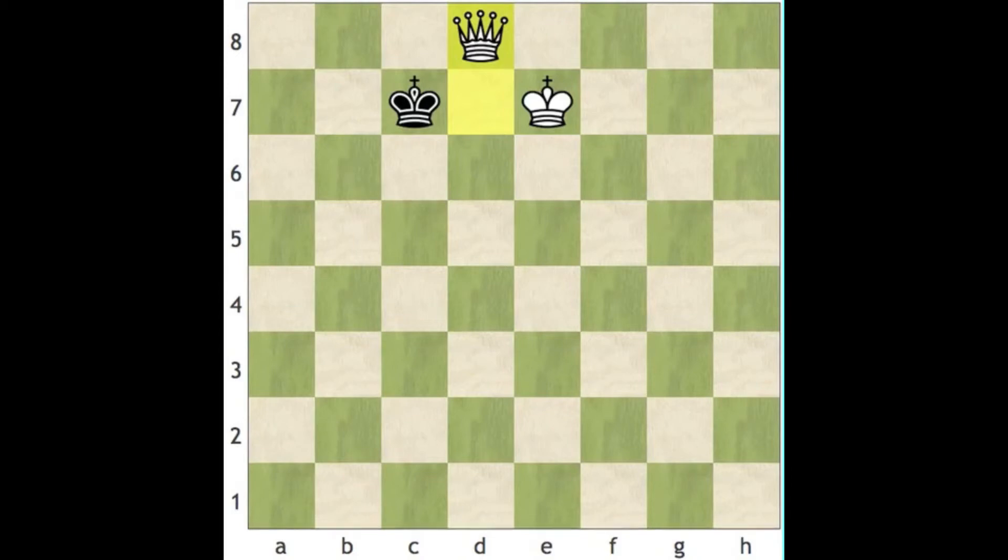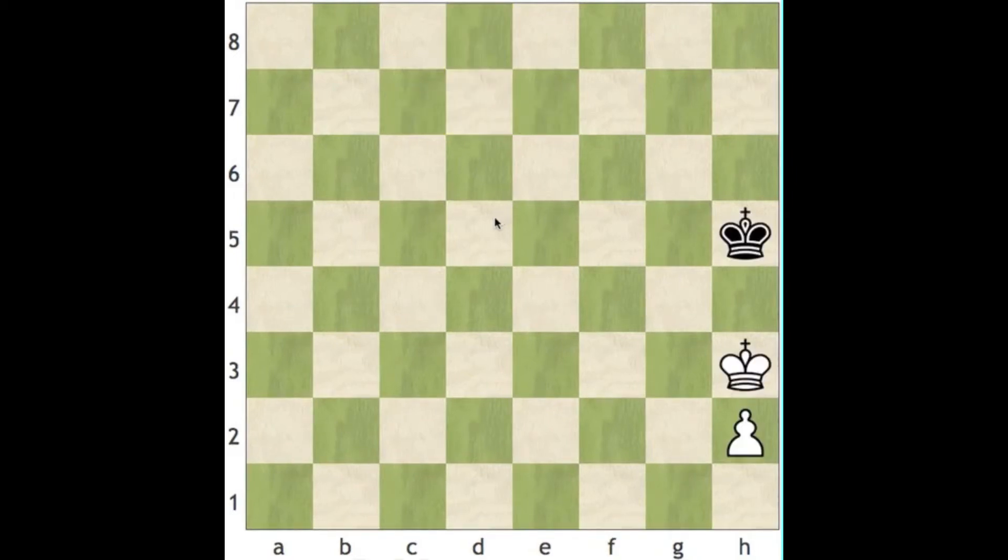The rook pawn endgame is usually considered a draw because of the simple fact that you don't have room to the side of the rook pawn. For every other thing except for a and h, you've got two files to the side. Like for b you've got c and a. For d you've got c and e. For f you've got g and e. You've always got two side files that you can shuffle along and go and promote. But that's not the case for the rook pawn.